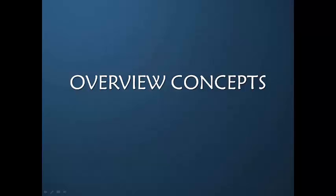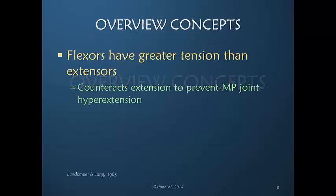Let's start with some overview concepts that are valuable. We're thinking about how the human finger moves. As we know, the whole flexor muscle tendon unit has much greater tension than anything on the extensor surface. Part of what happens is the tone that creates the flexor tone counteracts the extension power so that we don't hyperextend the MP joint.